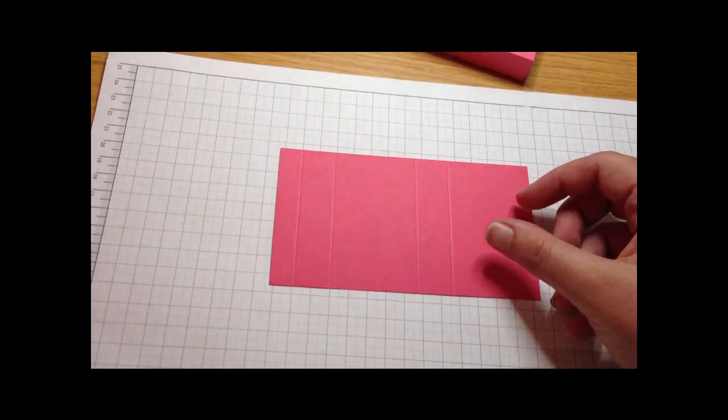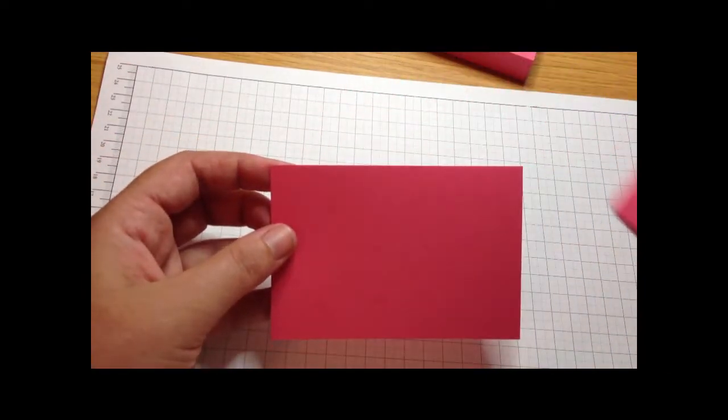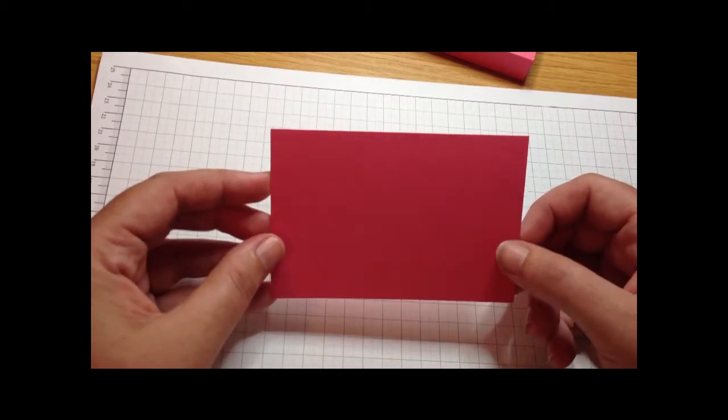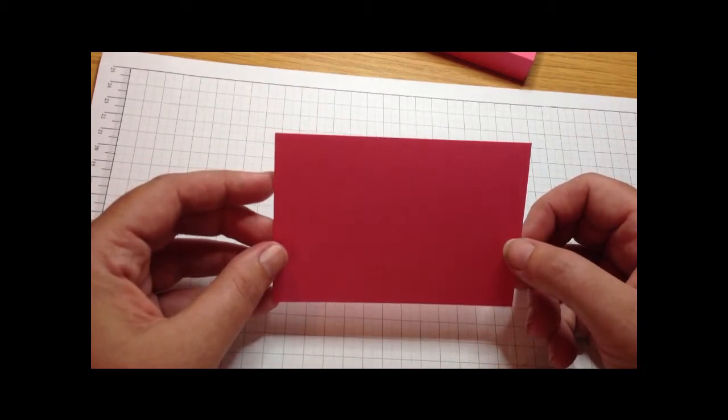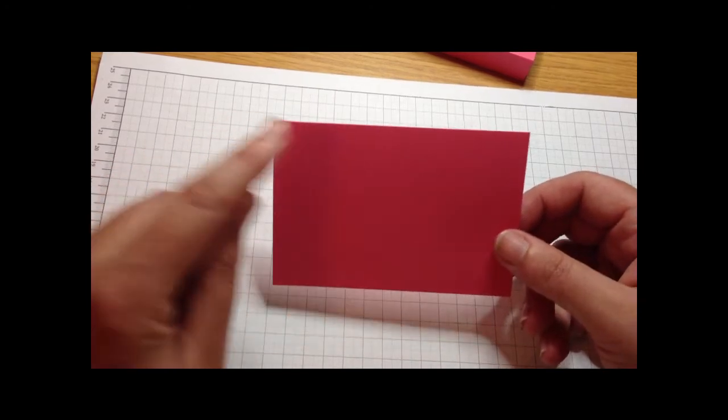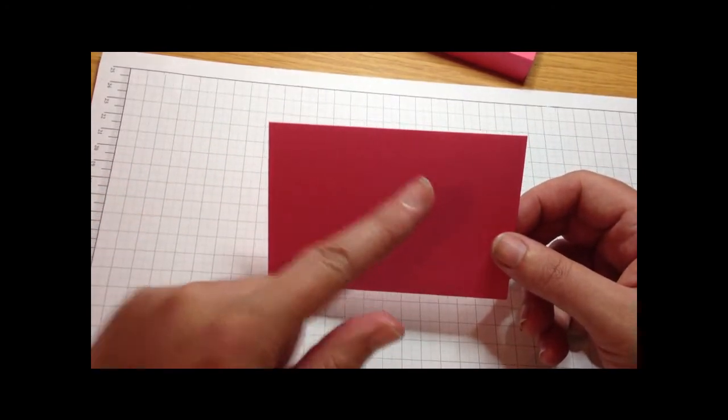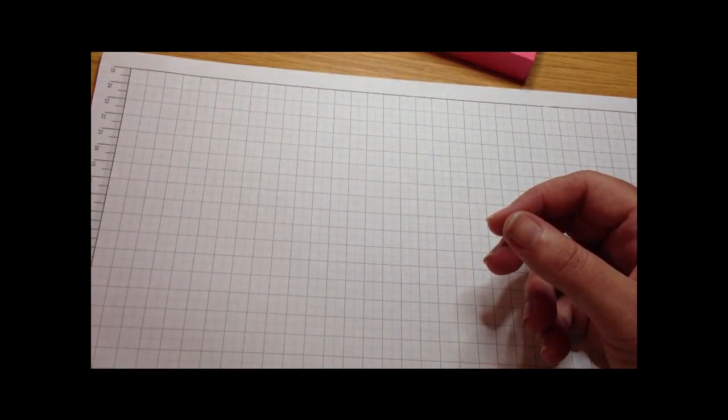Your second piece which is for the drawer, you are going to start with a piece of card which is 4¾ x 3¼ and you are going to score it at three quarters all the way around.